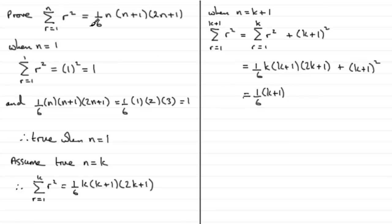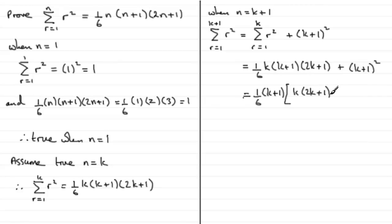That's looking quite good so far. I'm expecting to get k plus 1 plus 1 and two lots of k plus 1 plus 1 in the remaining brackets. So if I put a square bracket here, inside we need k and 2k plus 1 for the first term, giving k bracket 2k plus 1. For the last part, we've already pulled out one sixth, so we multiply by 6, giving plus 6, and we've pulled out k plus 1, so that reduces to just k plus 1.